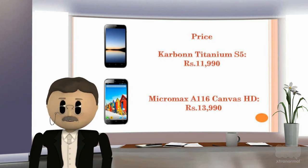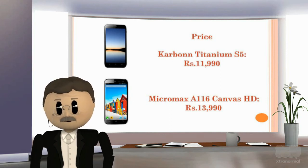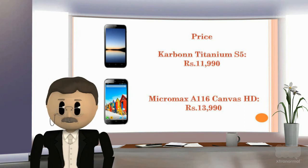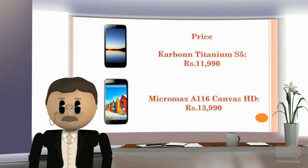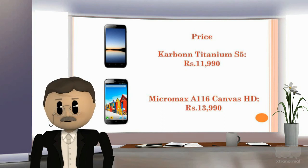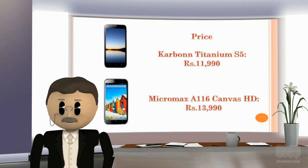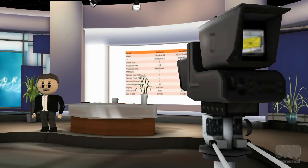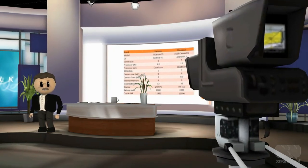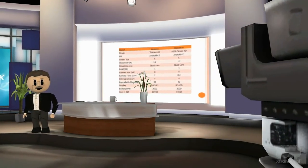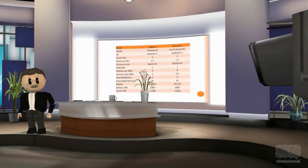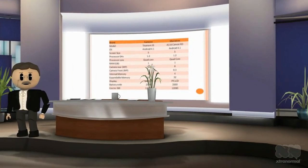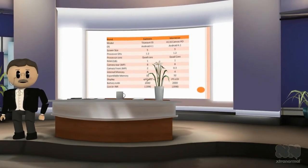Price of Carbon Titanium S5 is Rs. 11,990 and price of Micromax A116 Canvas HD is Rs. 13,990. Overview specifications of Carbon Titanium S5 and Micromax A116 Canvas HD.